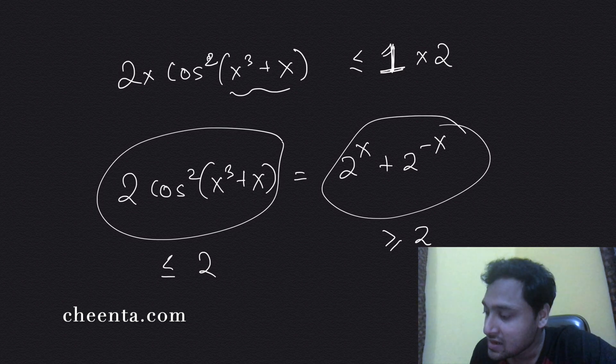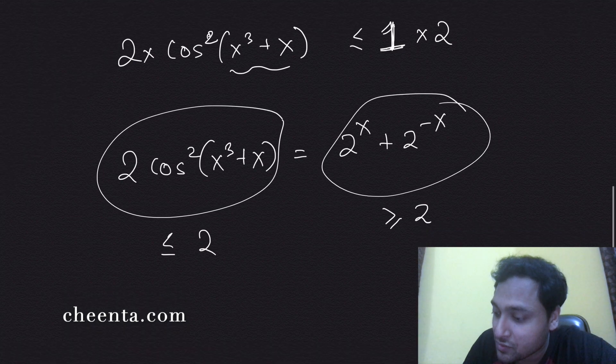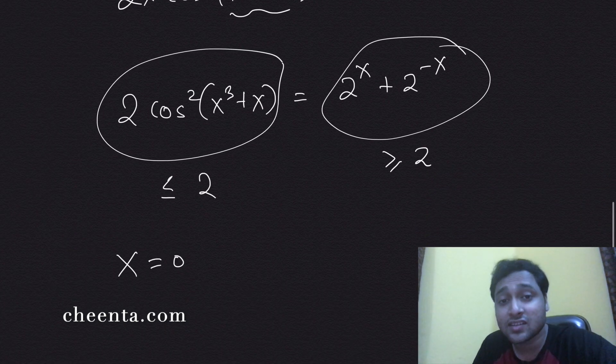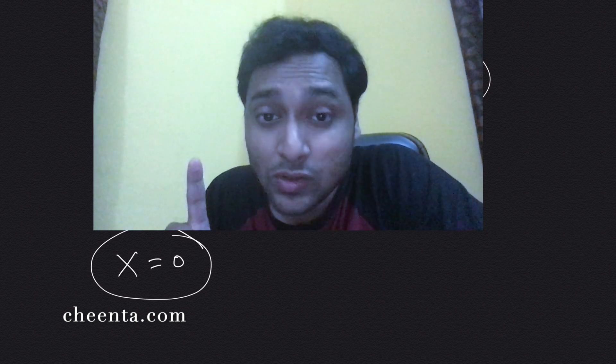And you can check that can only happen for x equals to zero. So in the comments in the description, can you tell me why the right-hand side can be equal to 2 only at x equals to zero?